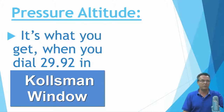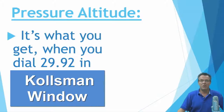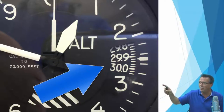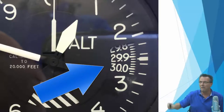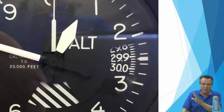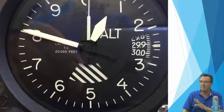So what is pressure altitude? It's what you get when you dial 29.92 in your Kohlsman window. A lot of people ask, what is the Kohlsman window? The Kohlsman window is that small window you see on the face of the altimeter. So with 29.92 approximately dialed in that window, our pressure altitude is about 800 feet.